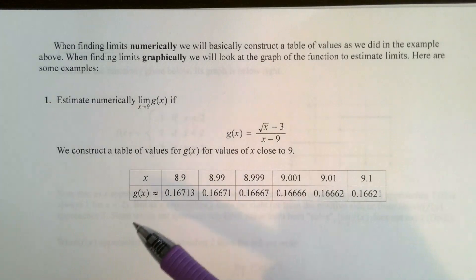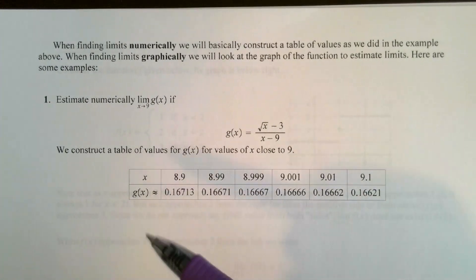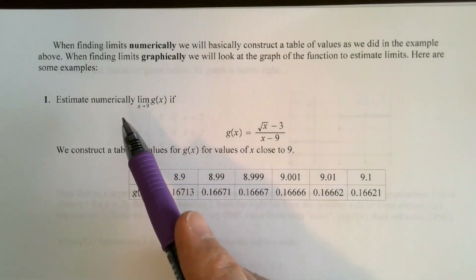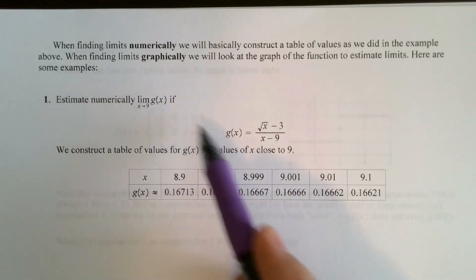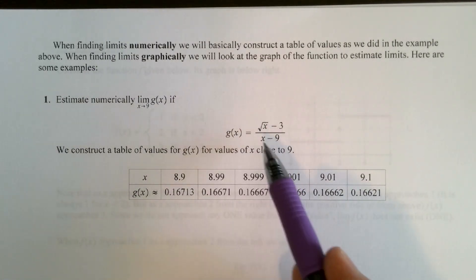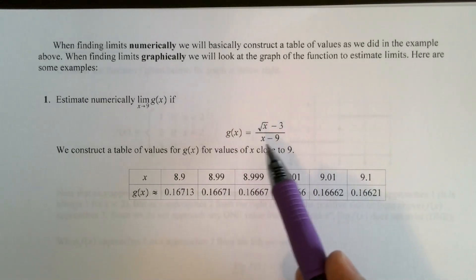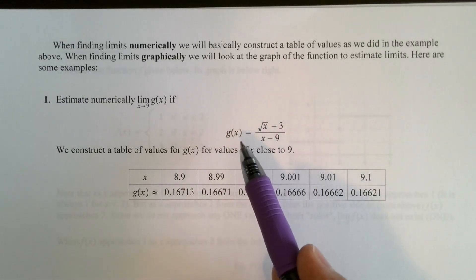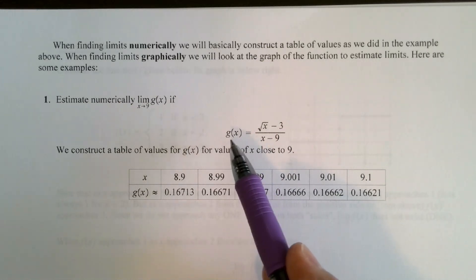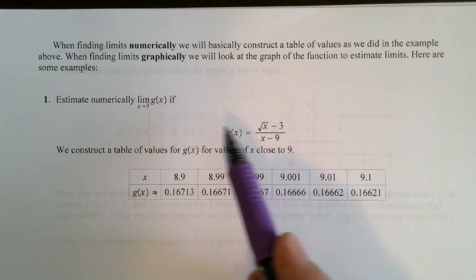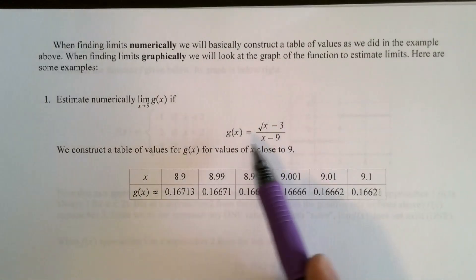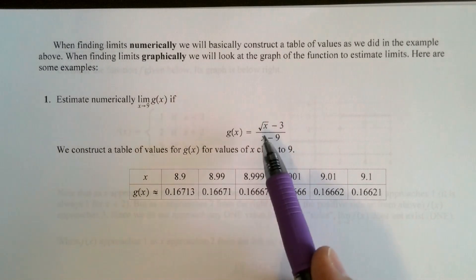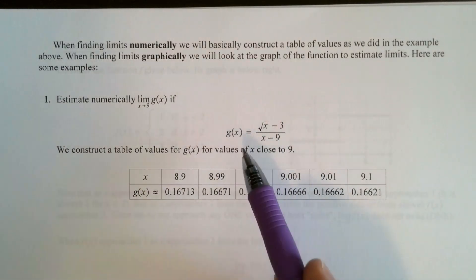Let's estimate the limit as x approaches 9 of the function g of x, if g of x is equal to this function here. Notice clearly that this function is not defined at x equals 9. And as we've said in the previous video, the value of the limit — what the function is trying to obtain — is not dependent necessarily upon the value of the function at 9 in this case.